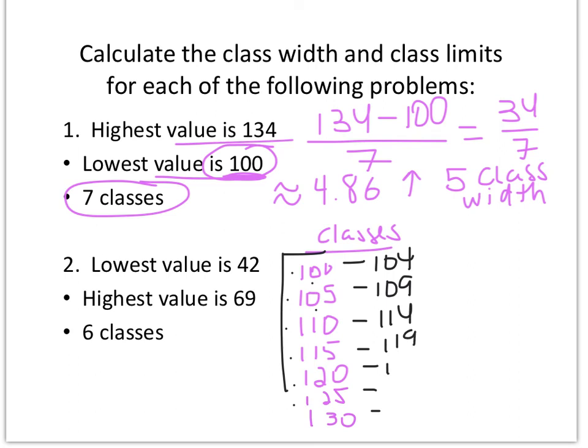Or you can just keep adding 5 on the right side as well. So this would be 114, 119, 124, 129, and 134. And these on the right are the upper class limits. So we have 7 classes, our class width is 5, and we've identified our lower class limit and our upper class limit.